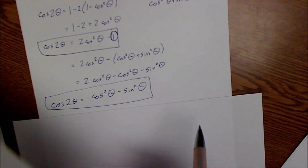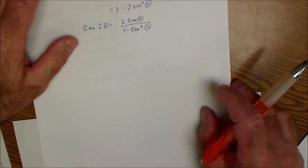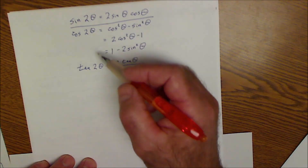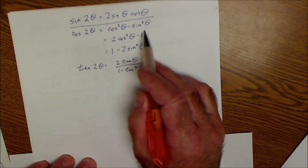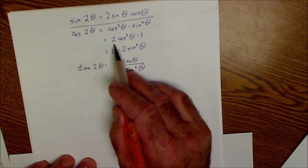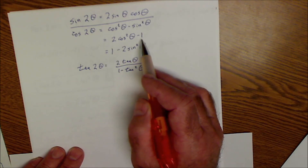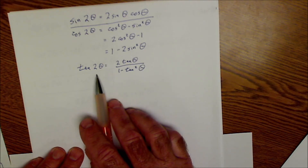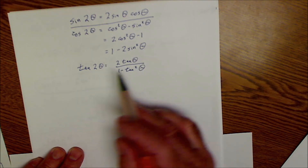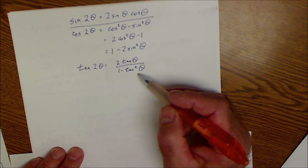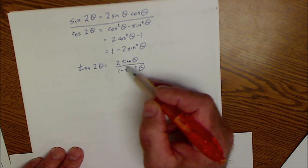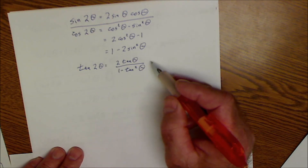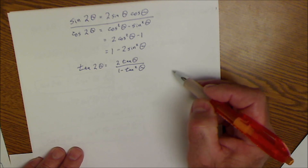So here are all the double angle identities. Sine of 2θ equals that. Cosine of 2θ can equal cos²θ − sin²θ, or 2cos²θ − 1, or 1 − 2sin²θ. The double angle identity for tangent of 2θ is 2tan θ over (1 − tan²θ) — remembering that could involve a secant squared — or equivalently tan(2θ) = sin(2θ)/cos(2θ).